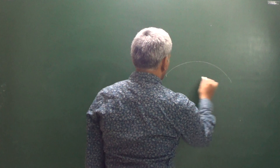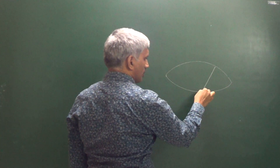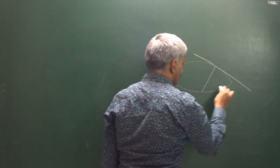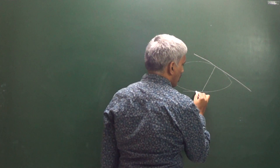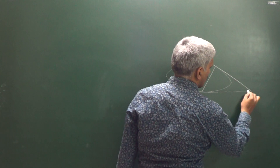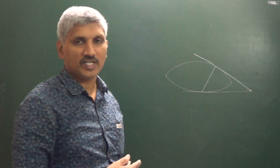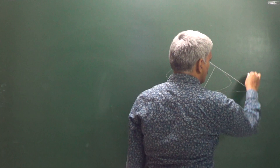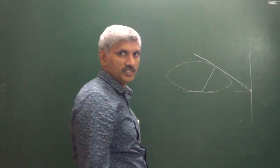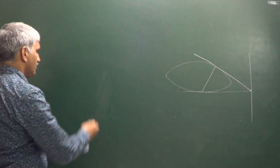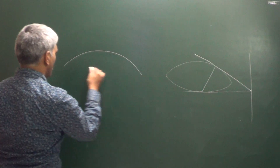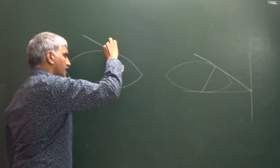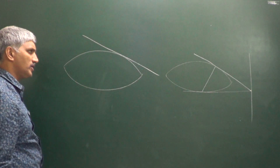Now another important point: for this ellipse, consider a focal chord. At the ends of the focal chord we draw tangents. The point of intersection of these tangents lies on the directrix.